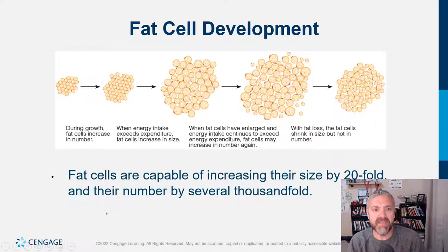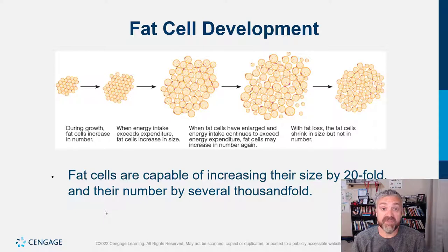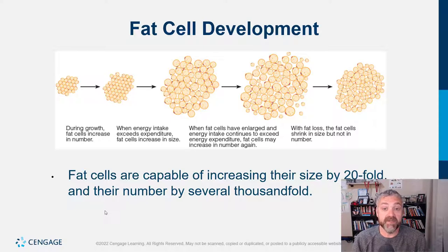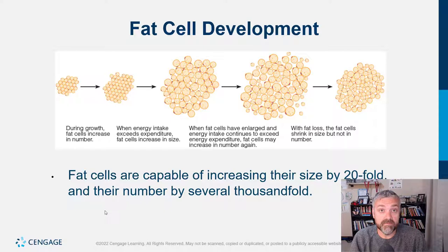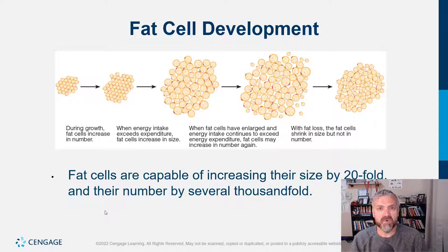Some people can be way overweight and still metabolically healthy because their fat cells can handle the amount of fat they have — it's mainly subcutaneous fat. Once your fat cells are full and excess nutrition spills into your bloodstream, that's when you see high cholesterol, high triglycerides, and fatty liver disease. Some people, especially genetically those from certain parts of the world, start seeing high triglycerides and fatty liver disease even at much lower weights because they don't have the genetic capacity to store fat that others do.